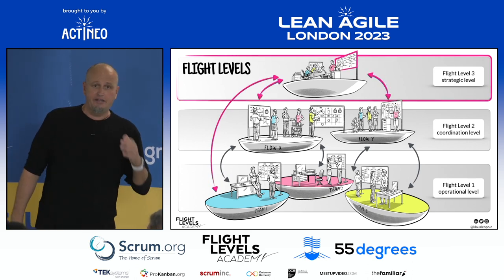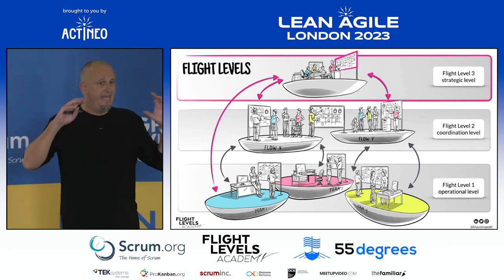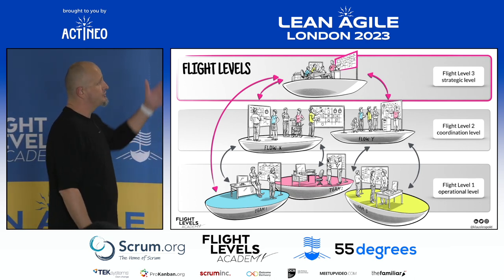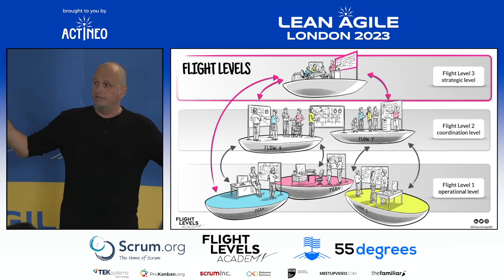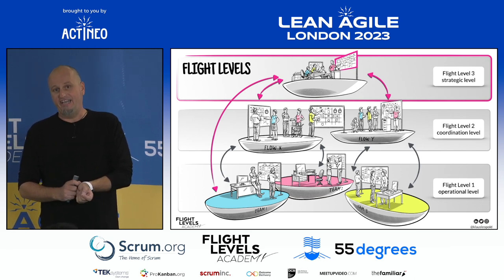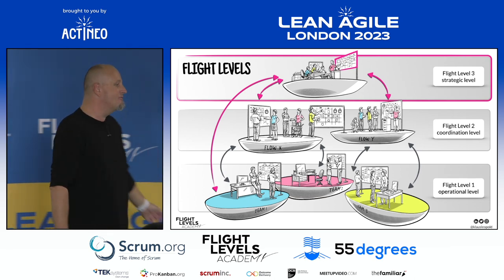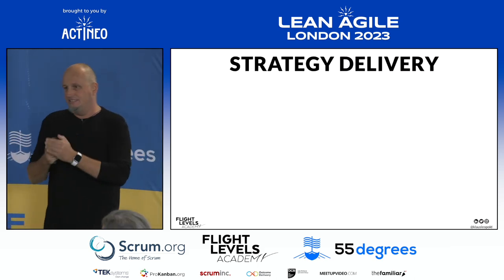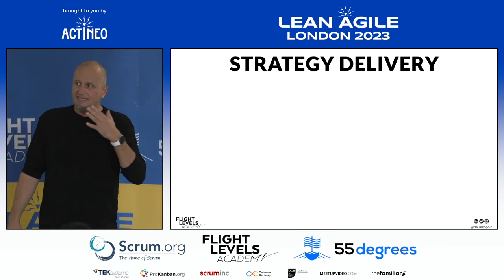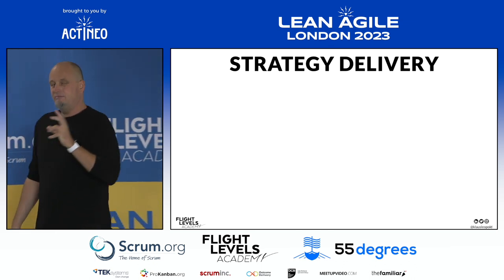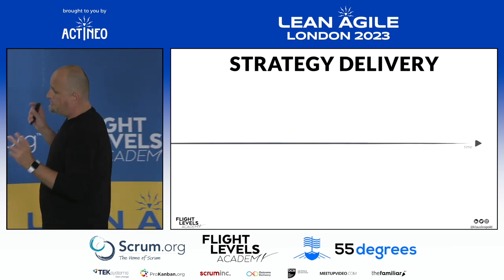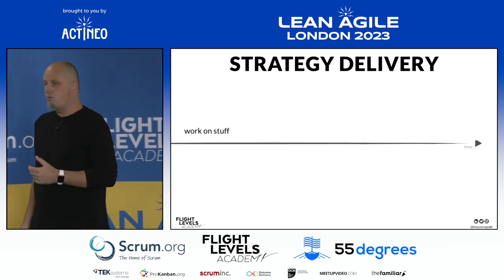Today I want to focus on Flight Level 3 and share some experience and thoughts on how organizations use it. Flight Level 3 is all about strategy and delivering strategy. And this is sometimes done a little bit strangely in organizations. Let's draw a timeline — in many organizations, people are working on stuff, which is great because that's why they get a paycheck. Then there is an event where the strategy is announced.